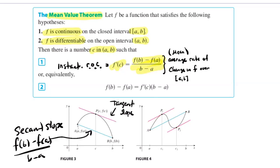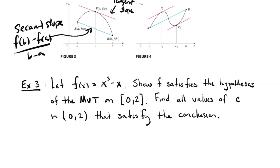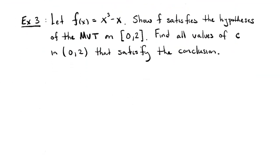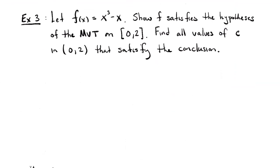You can look in your book for a proof of the Mean Value Theorem — it basically does some algebraic manipulation to turn it back into Rolle's Theorem. Instead of proving it, let's do a similar example. This time I'm taking the cubic polynomial f(x) = x³ - x. I want to show it satisfies the hypotheses of the Mean Value Theorem on the interval from 0 to 2, and find all values of C in between that satisfy the conclusion.